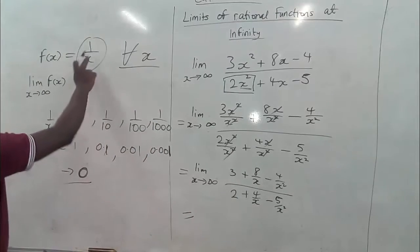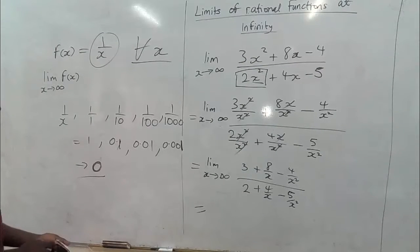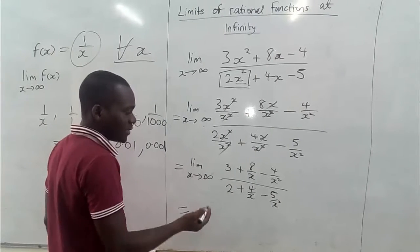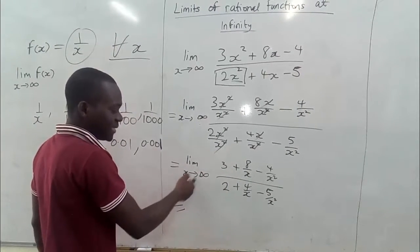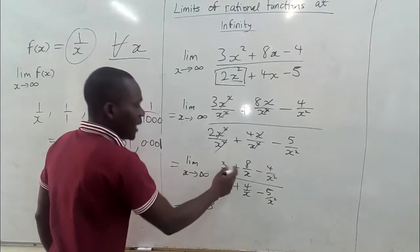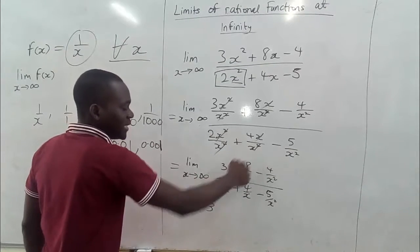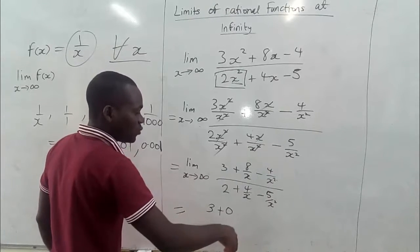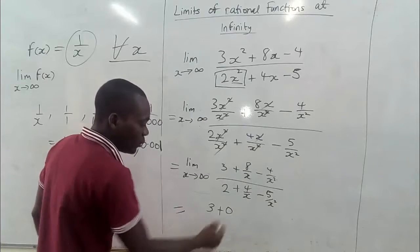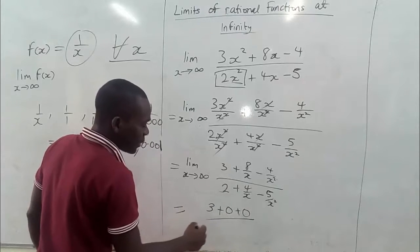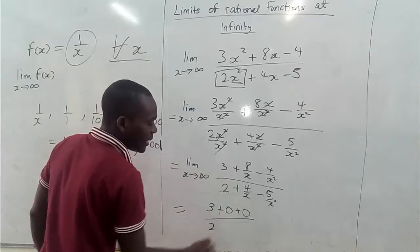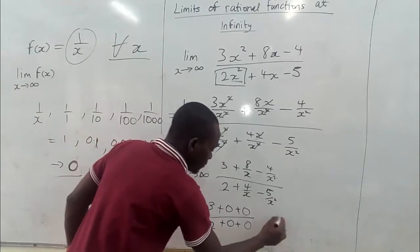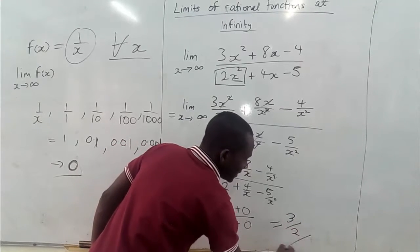Now we take the limit of what's left as x approaches infinity. We have: (3 + 8/x − 4/x²) / (2 + 4/x − 5/x²). As we saw for the parent function, any number over x goes to 0 as x moves without bounds. So 8/x → 0, 4/x² → 0, 4/x → 0, and 5/x² → 0. The constants 3 and 2 remain. So we end up getting 3/2 as the limit.